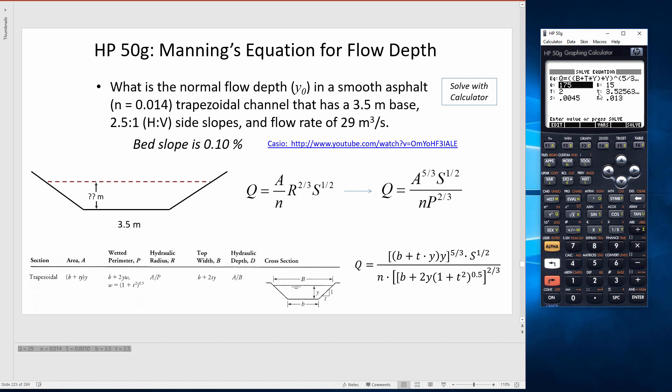And now I'll just type in the given values. For this one, it's 29 for Q. The B, the bottom width is 3.5. These values that are in here are from a previous problem. So 2.5 is the side slope horizontal distance. The depth is unknown, so it needs a guess to start with, but I'm just going to leave that incorrect value there and solve for it later. The slope is 0.001.